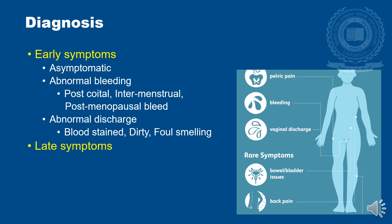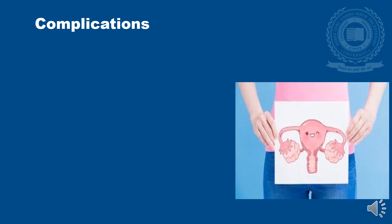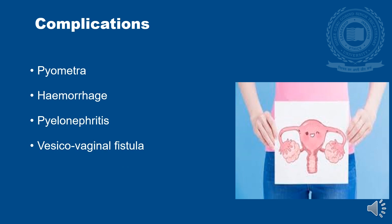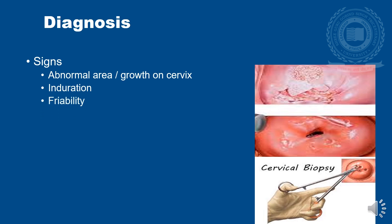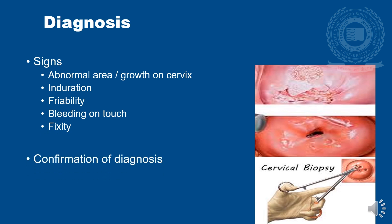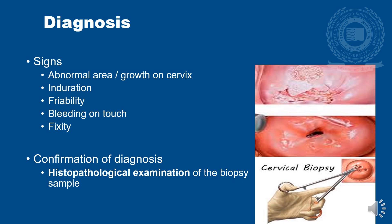Late symptoms include pelvic pain, abdominal pain, and urinary and rectal symptoms. In late stages, complications such as pyometra, hemorrhage, pyelonephritis, vesicovaginal fistula, uremia, and rectovaginal fistula may occur. Signs of CA Cervix include any abnormal area or growth on the cervix, presenting as induration, friability, bleeding on touch, or fixity. Confirmation of diagnosis is by histopathological examination of a biopsy sample.